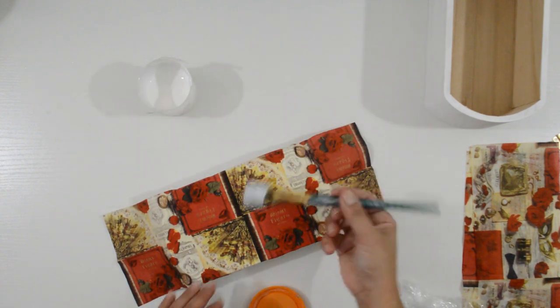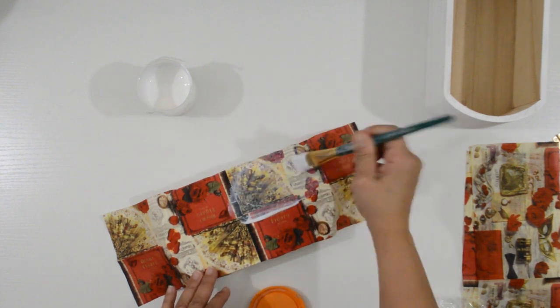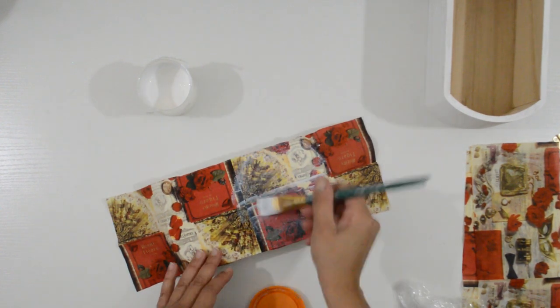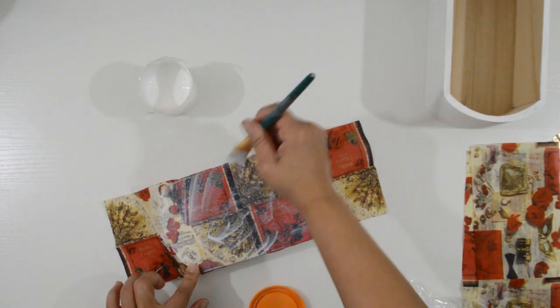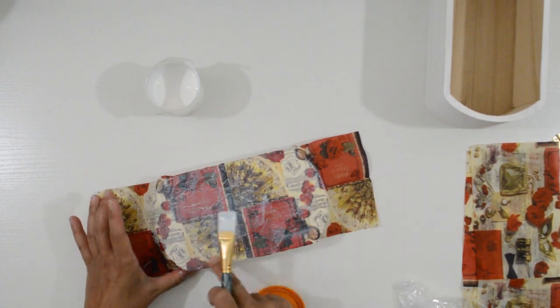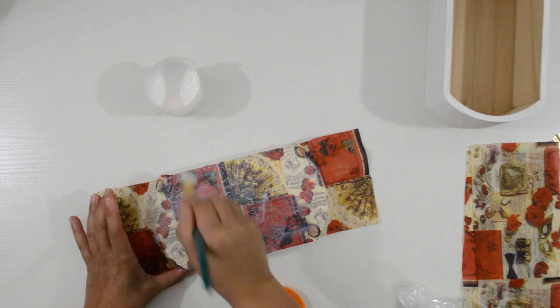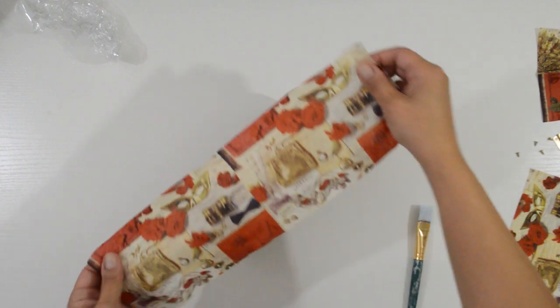Once you've gotten the wrinkles out, give it one last coat of Mod Podge to seal it in. Repeat the steps to cover the bottom of the box.